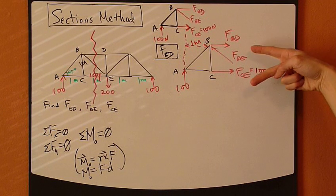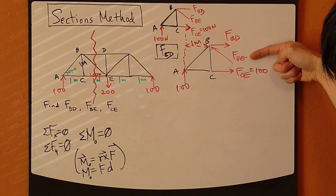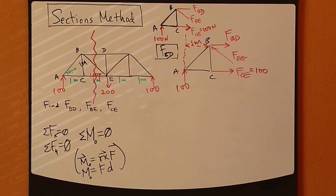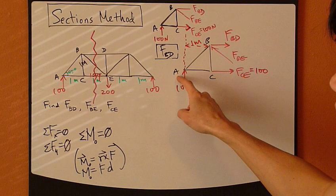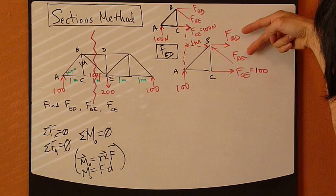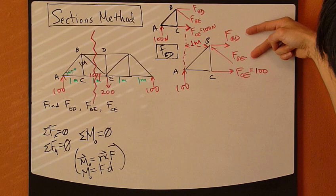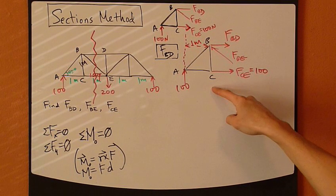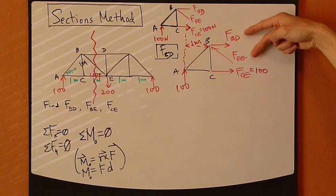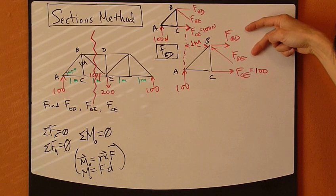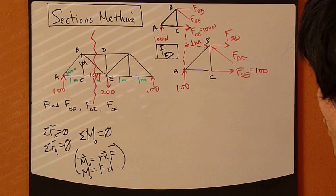Which point would that be? Point A is no good — if you sum moments about joint A, both BD and BE will appear and create moments. What about joint C? That's not good either — BE and BD each create a moment, so both terms appear in the equation. So joints A, B, and C are all no good.